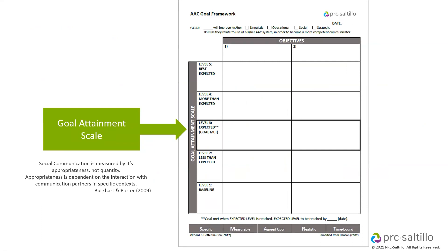The value of the goal attainment scale for SLPs in AAC is that it measures client progress in functional situations and communicative exchanges that can't otherwise be measured by percentages and trials. We won't always get 8 out of 10 with AAC learners — that's not going to be the goal. The rubric format is not an all-or-nothing setup; it challenges the goal writer to consider each level and how progress for each skill is best tiered, so we can see the change and progress.